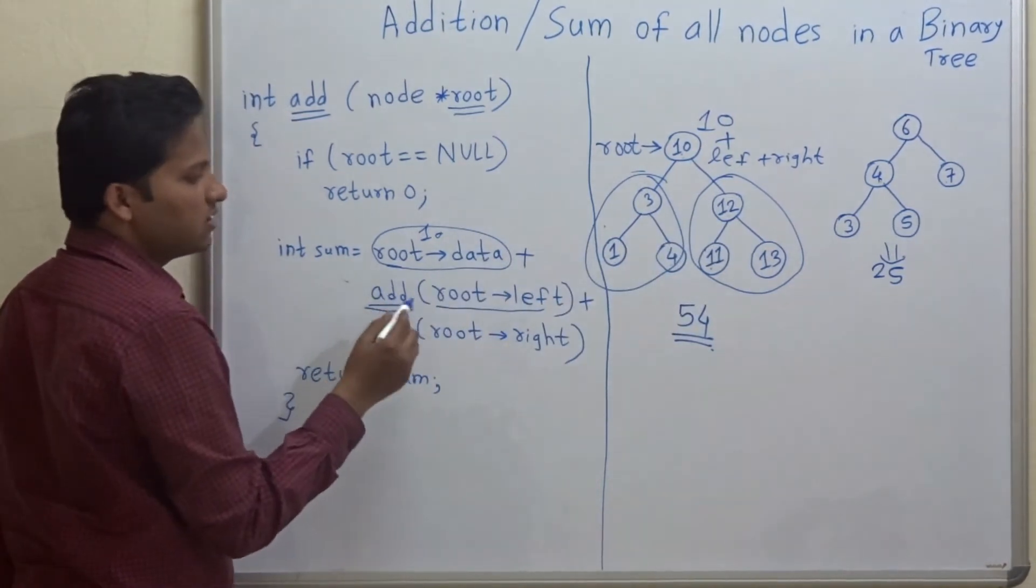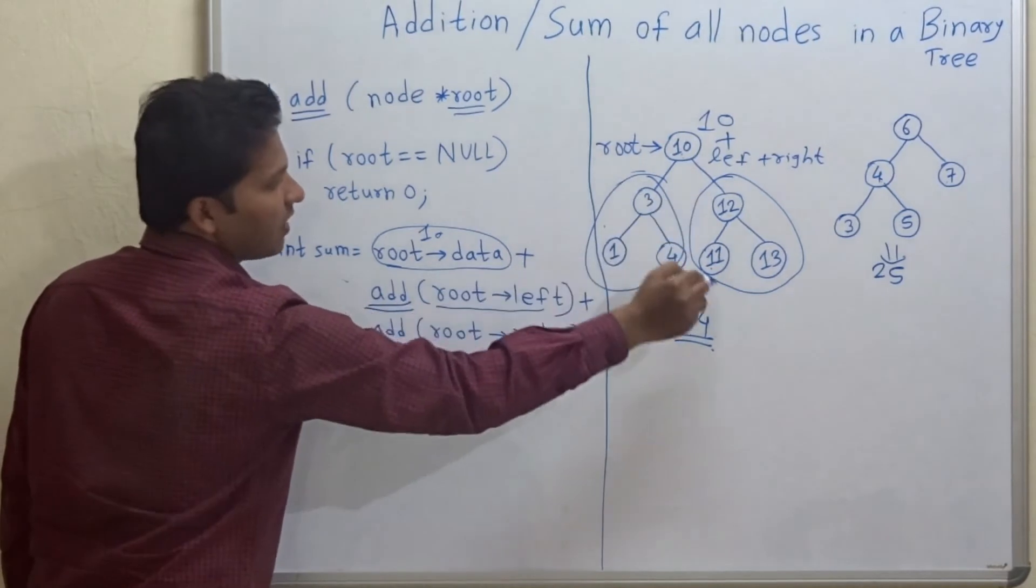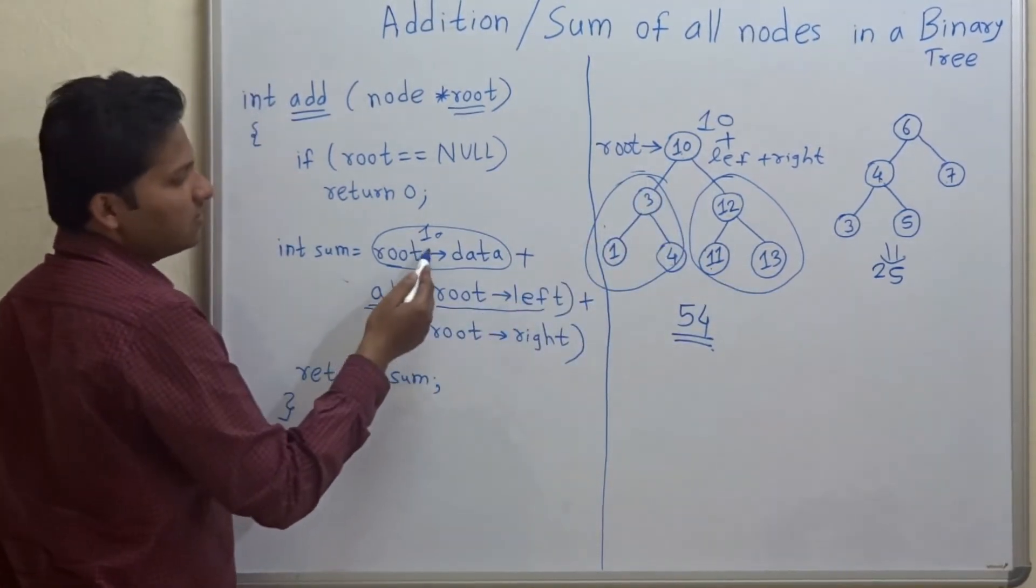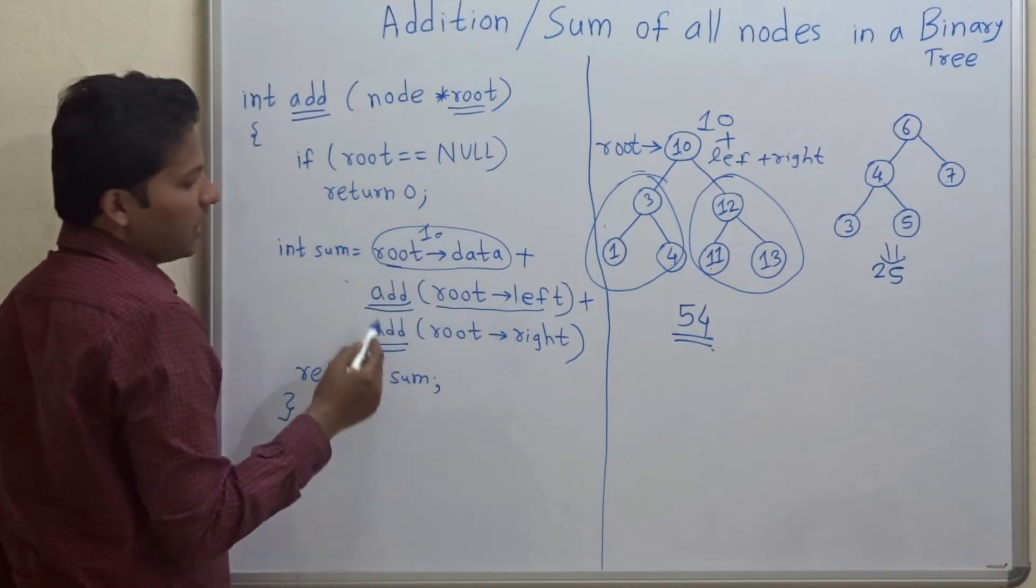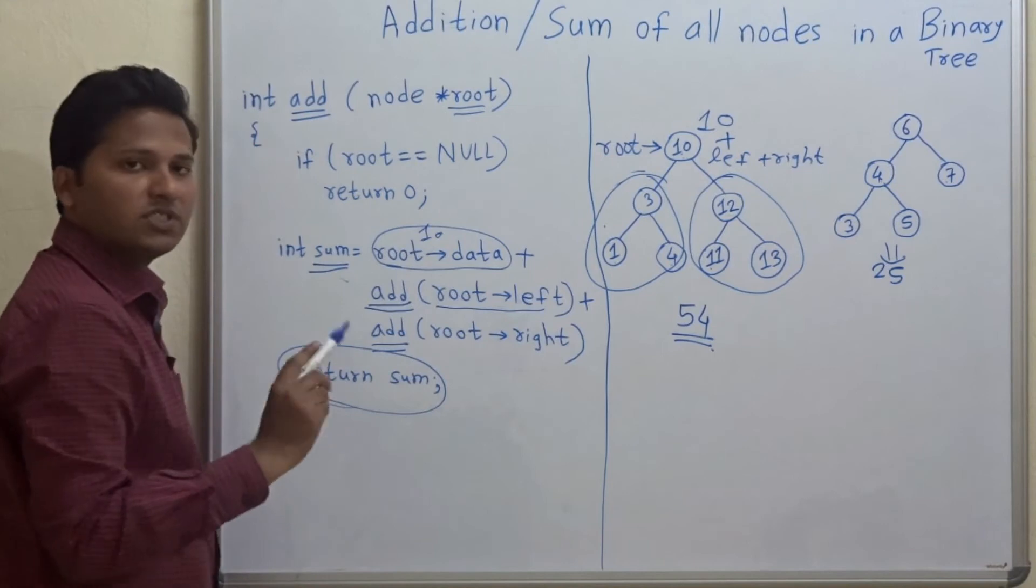So these functions will return the addition of left sub tree and right sub tree respectively. And then we will add the root data in that and that will be our final sum. This happens with every node.